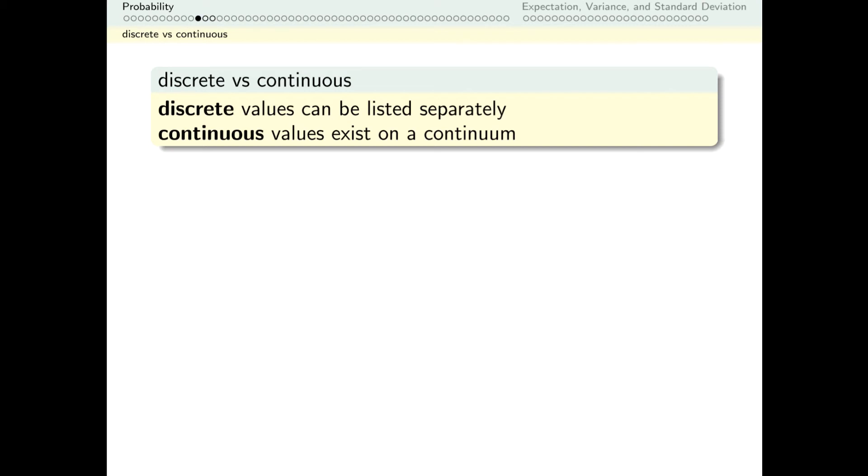Here's two more vocabulary words, discrete and continuous. We think of discrete values as having kind of a separation or a gap between them, whereas continuous values exist along more of a spectrum.